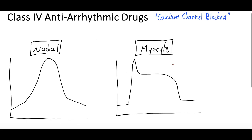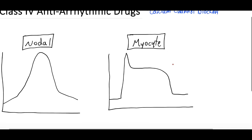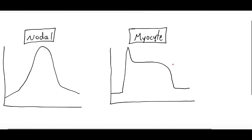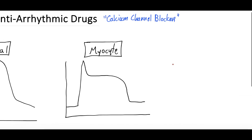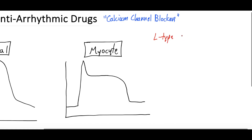Class 4 antiarrhythmic drugs — we'll get back into these depolarization action potential graphs here in a second. But calcium channel blockers essentially block L-type calcium channels.